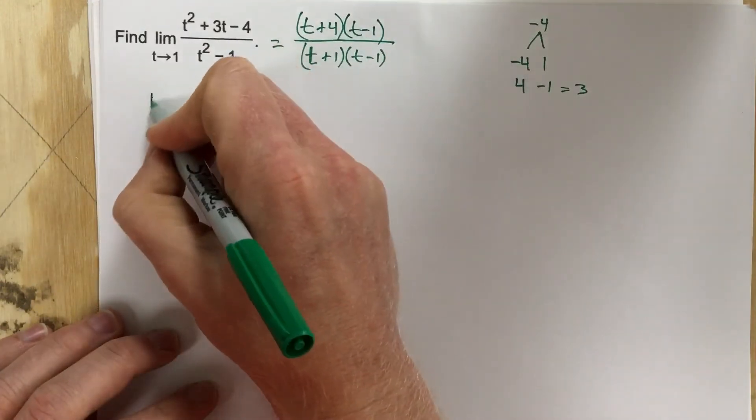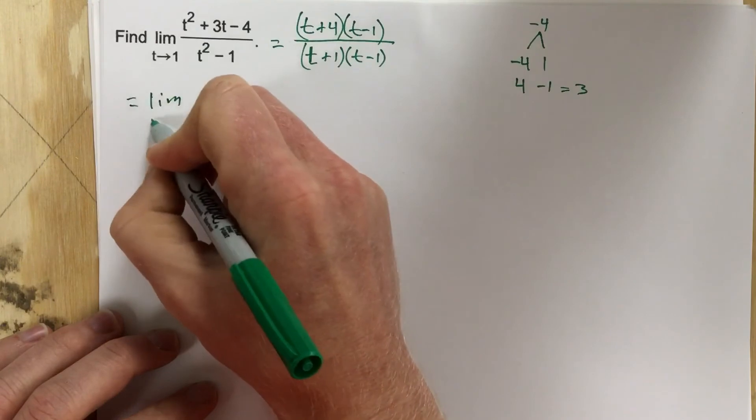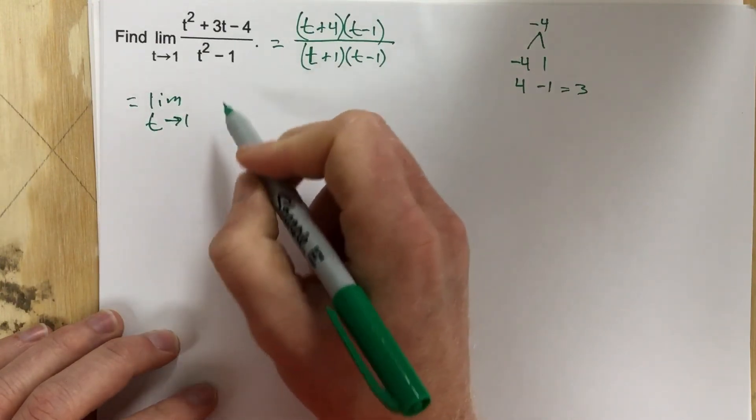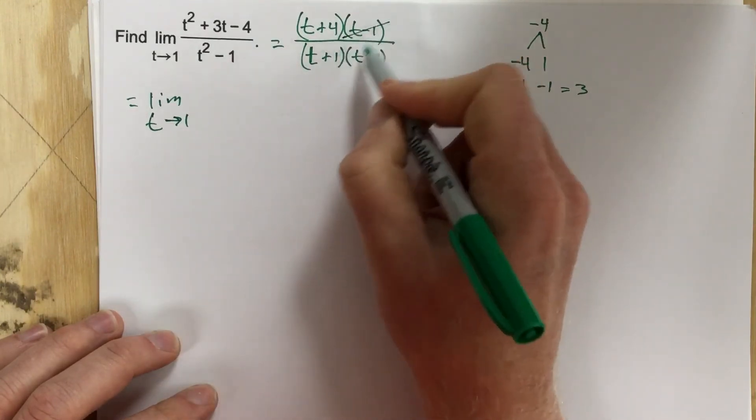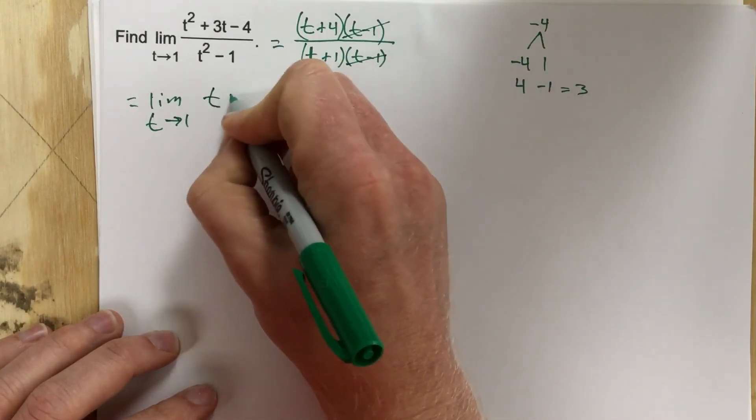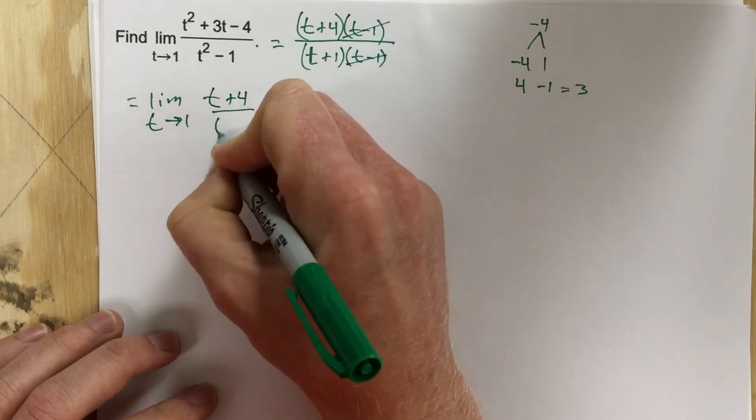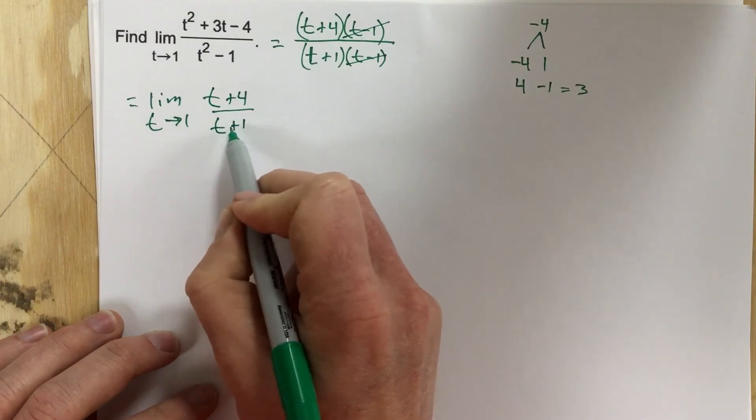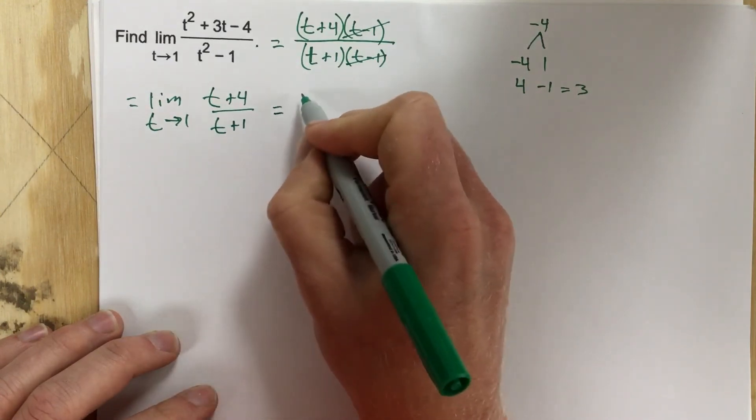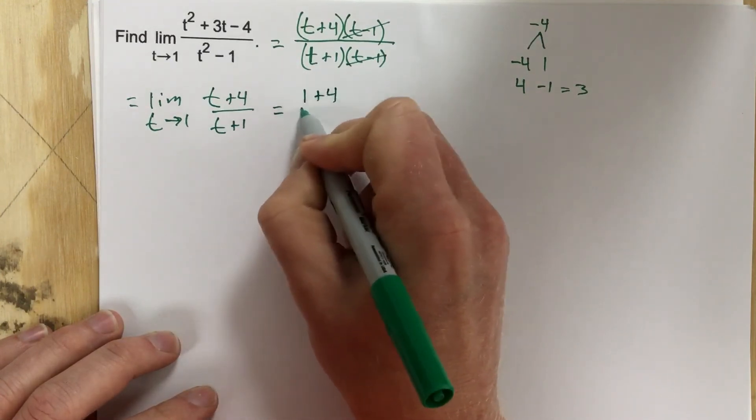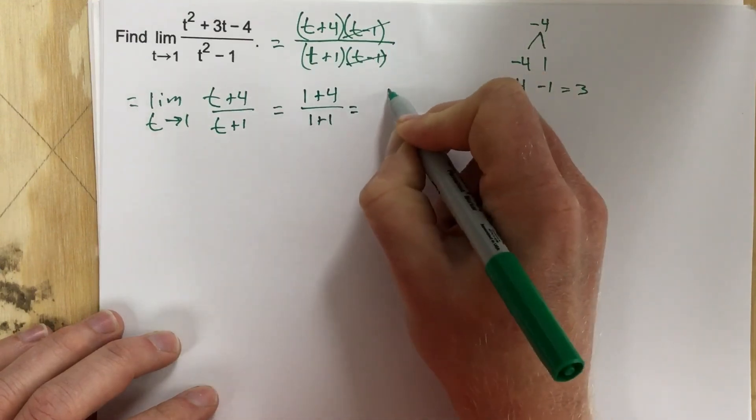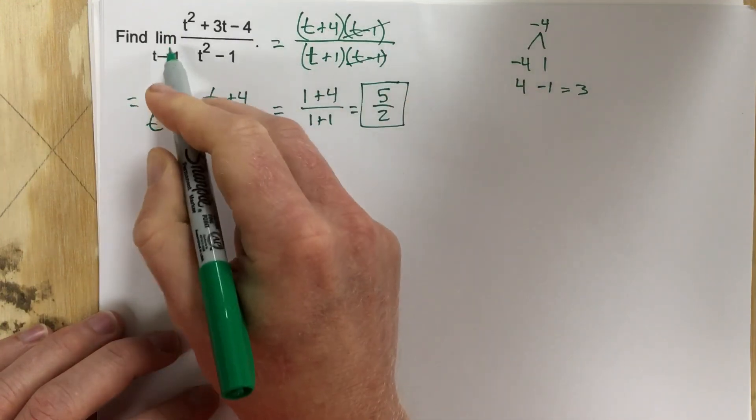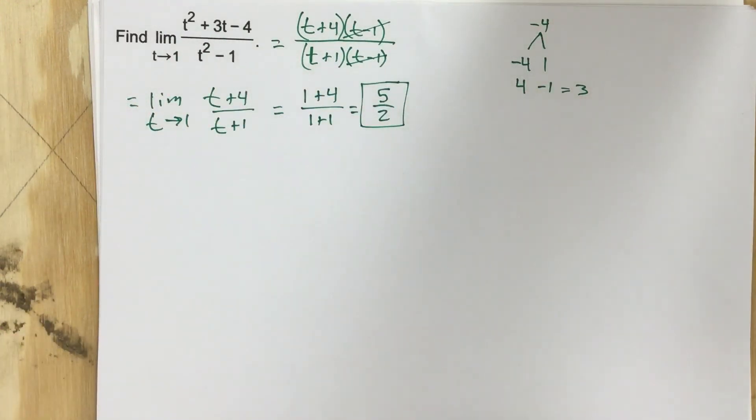As you can see, I end up with the limit as t approaches 1. The t minus 1 cancels, leaving you with just t plus 4 over t plus 1, and now I can plug 1 in because it doesn't make the denominator 0. So that's going to equal 1 plus 4 over 1 plus 1, which is 5 over 2. So the limit as t approaches 1 for that function is 5 over 2.